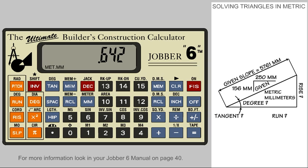Another way we could have found the tangent would have been by dividing 156 by 250, which equals 0.624. This is the tangent, and we could have put it directly in the pitch. In either case, we now have the pitch in the calculator.